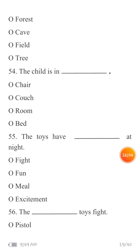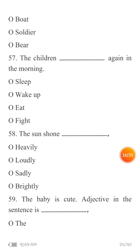MCQ 55: 'The toys have blank at night.' Khilone raat ko kya karte hain? Your options are: fight, fun (maza karte hain), meal (khaana khate hain), or excitement (bohut excited hote hain).